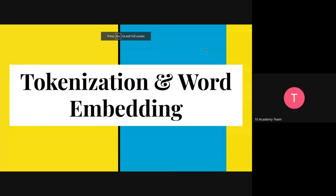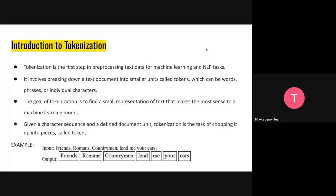We're going to talk about the introduction to tokenization. When it comes to NLP, the first step in the pipeline is tokenization. It's the process of preparing text data for machine learning in any related tasks. What's involved in tokenization is breaking down text data into smaller units which we call tokens, so they can be easier for machine learning models to understand.